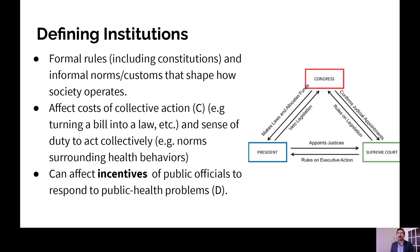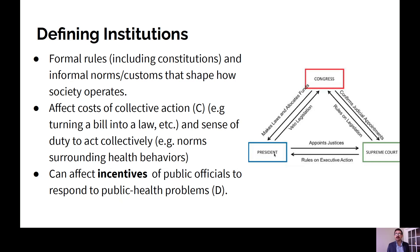The example on the right is probably something most people are familiar with from an introduction to civics class: the separation of power between branches of government in the United States. We have Congress, which makes laws and allocates funds; the president, which appoints justices, makes executive actions, and can veto legislation. It's a simplified view of American government, but that's really what we're talking about when we talk about institutions — the rules of the game. And the rules of the game can really affect the way that we make decisions.